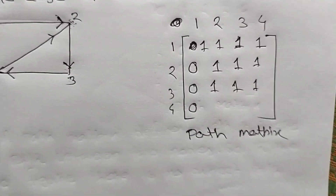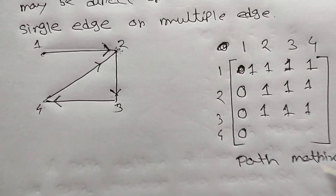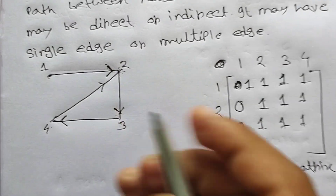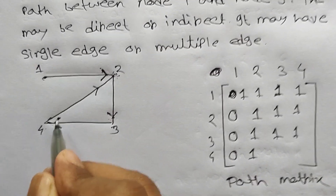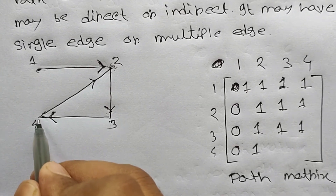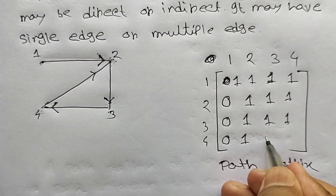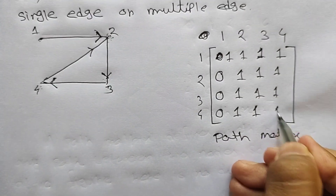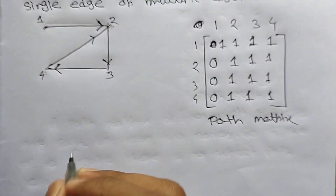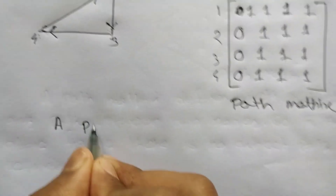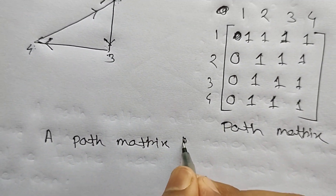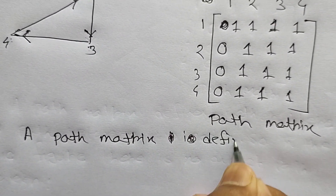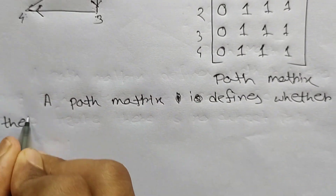4 to 1 — no directed path; we can try 4→3→2 but 2 to 1 we cannot go, so 0. 4 to 2 — there is a directed edge, so 1. 4 to 3 — no directed edge (direction is 3 to 4), but we can go 4→2→3, so put 1. 4 to 4 — put 1.